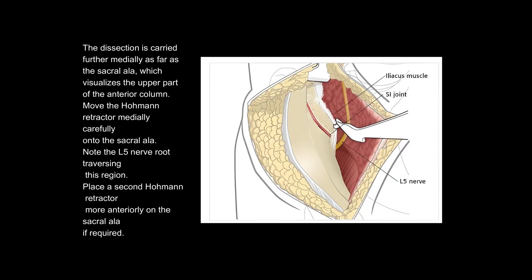The dissection is carried further medially as far as the sacral ala, which visualizes the upper part of the anterior column. Move the Hohmann retractor medially carefully onto the sacral ala. Note the L5 nerve root traversing this region. Place a second Hohmann retractor more anteriorly on the sacral ala if required.